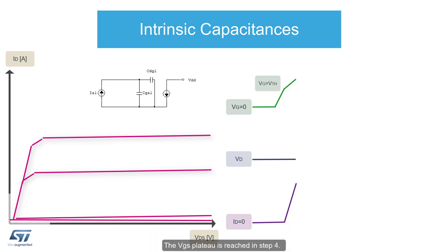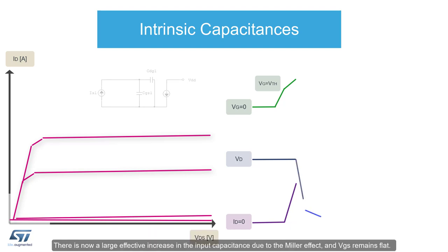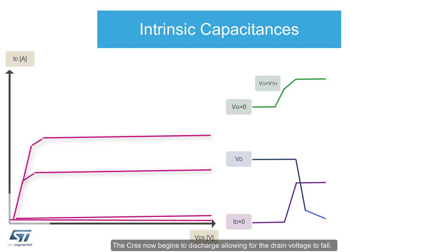The VGS plateau is reached in step four. There is now a large effective increase in the input capacitance due to the Miller effect, and VGS remains flat. The CRSS now begins to discharge, allowing for the drain voltage to fall. The drain current remains constant at its peak steady state value.